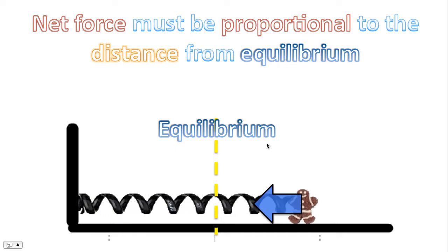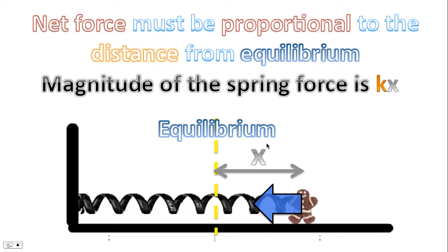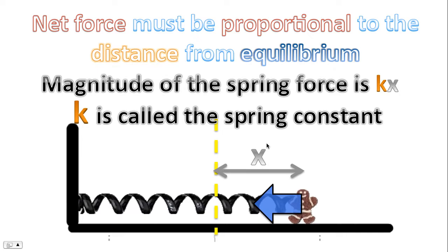Net force must be proportional to the distance from equilibrium. If we use the symbol x to represent the distance from equilibrium to the center of mass of the object, then in this situation, for a spring force, recall that the force is given by the expression k times x, where k is called the spring constant. So for springs, this satisfies the condition that the net force must be proportional to the distance from equilibrium, as it's given by the formula: spring constant multiplied by x, the distance from equilibrium.